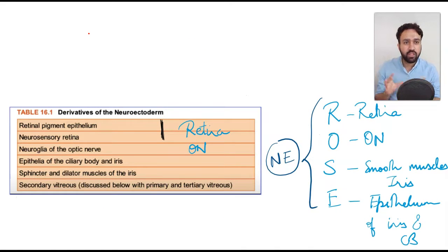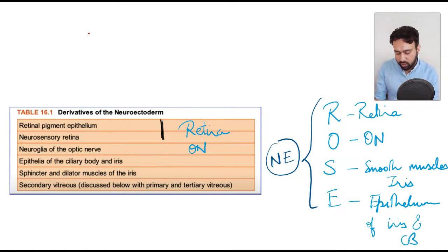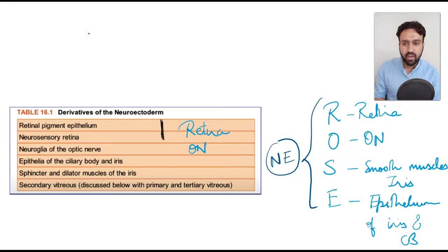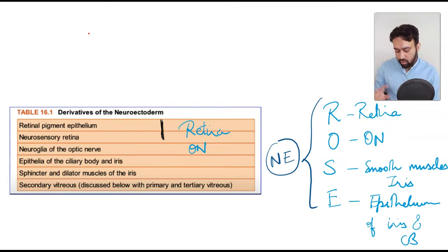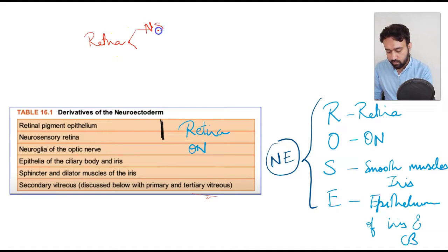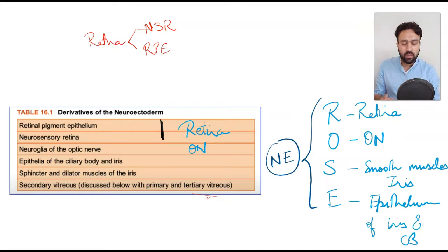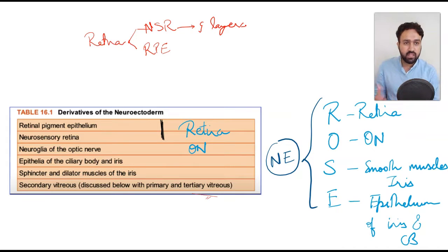Let's study what's developing from the neuroectoderm. Remember the neuroectoderm produces the neural tissues of the eye. The neural tissues of the eye include the retina and the optic nerve. Retina has two parts: the neurosensory retina as well as the RPE. Both are formed from the neuroectoderm — the neurosensory retina which means the nine layers, and the RPE which is the 10th layer, are all derived from the neuroectoderm.